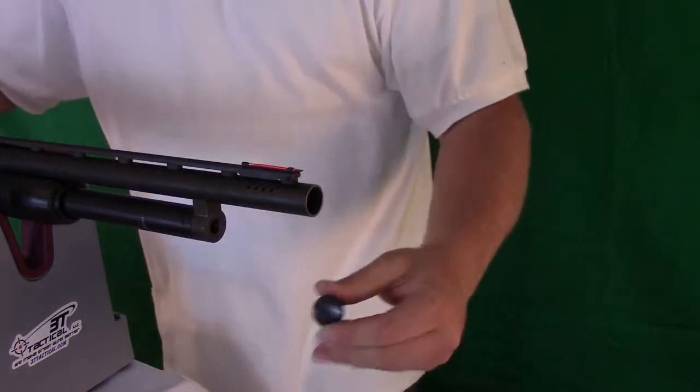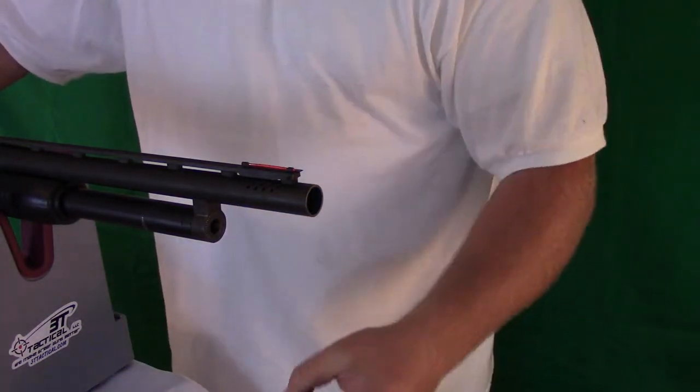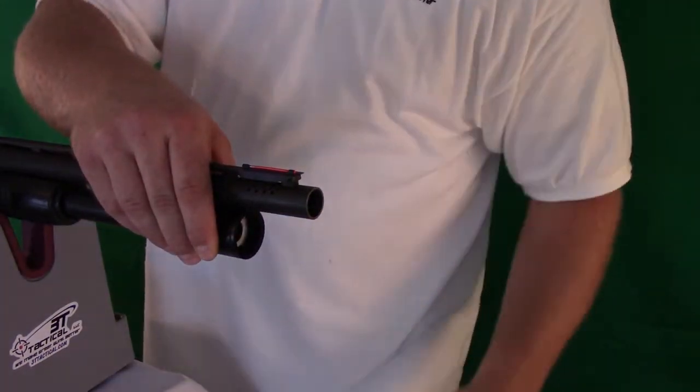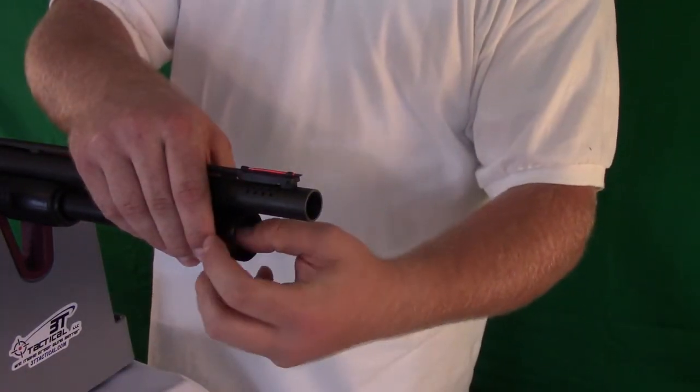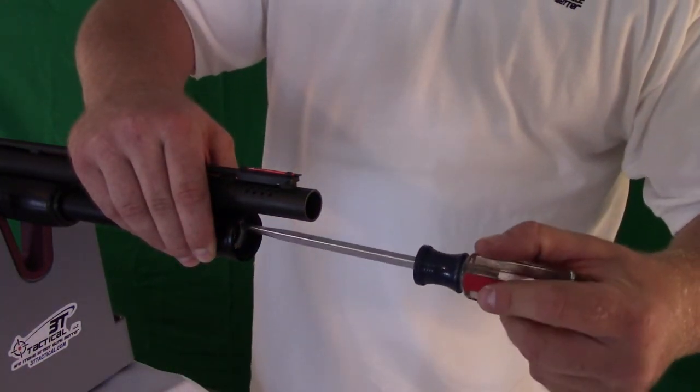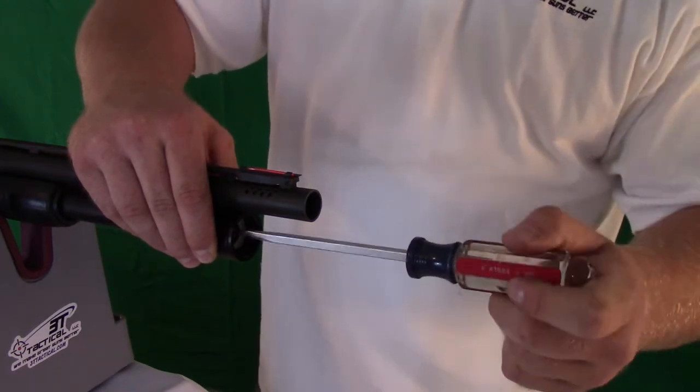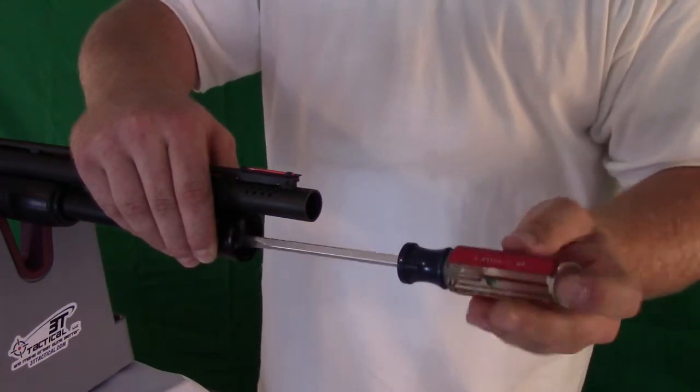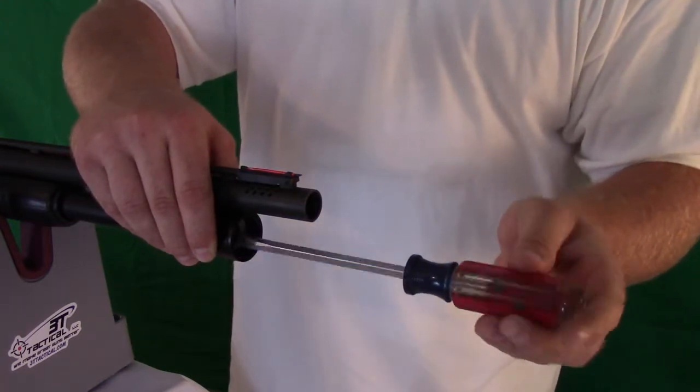First we start off with unscrewing the magazine cap, installing the quick coupler, and applying the supplied bolt. Using a standard flat head screwdriver, you simply thread the bolts in clockwise. No gunsmithing needed on any of these products.